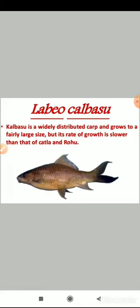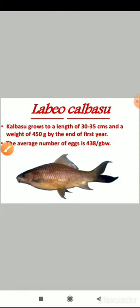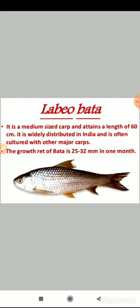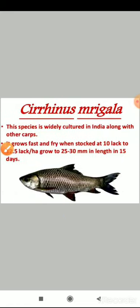Labio kalbasu is a widely distributed carp that grows to a fairly large size, but its rate of growth is slower than that of Katla and Rohu. Kalbasu grows to a length of 30 to 35 centimeters and a weight of 450 grams by the end of the first year. The average number of eggs is 438 per gram of body weight. Labio bata is a medium-sized carp attaining a length of 60 centimeters, widely distributed in India and often cultured with other major carps. The growth rate of bata is 25 to 32 millimeters per month.